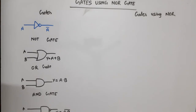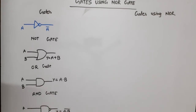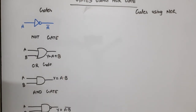Now I am going to implement gates using NOR gate only. NOR gate is a universal gate — by using NOR gate we can implement any gate. Let's start with NOT gate.